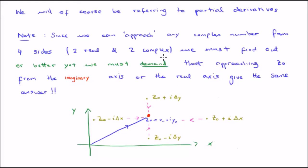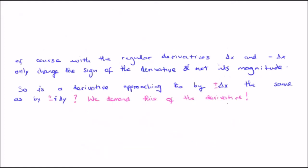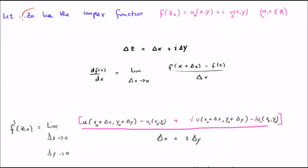The question this poses is: is it actually equivalent to approach z0 from any of these directions — does it give the same result? What we are going to demand is that in order for differentiation of complex numbers to make sense, approaching z0 from the imaginary axis, the real axis, or combinations of both must always give the same result. Think about when we take derivatives of real numbers: if we increment our function by delta x or by negative delta x, the derivative's magnitude doesn't change — simply the sign or parity changes. So the question with our complex number is whether incrementing by plus or minus delta y behaves equivalently.